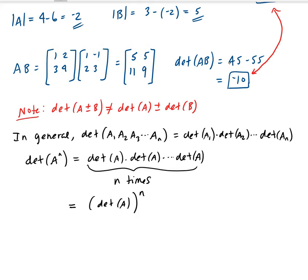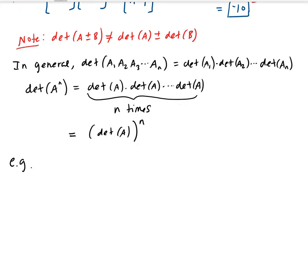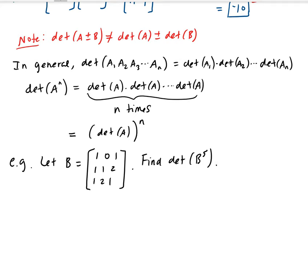I want to do an example of this. Let B be the matrix [1, 0, 1; 1, 2, 1; 2, 1, 1] — a 3 by 3 matrix. We want to find the determinant of B to the fifth power. We'll first find the determinant of B, and then raise it to the fifth power.